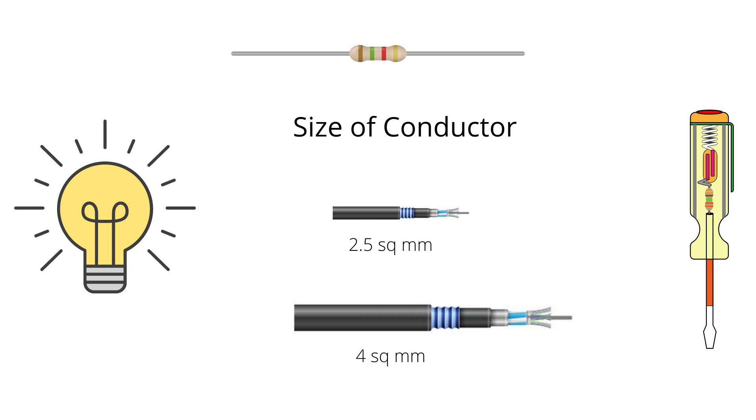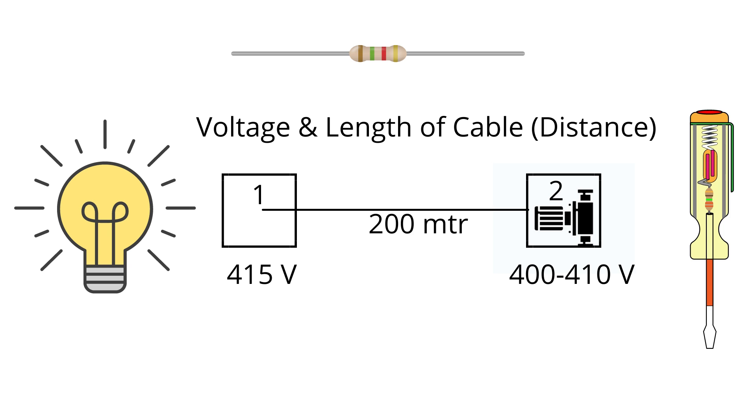The third and most crucial factor affecting voltage drop is dependent on the voltage and length of the cable, that is, the distance between the supply point and the receiving point.